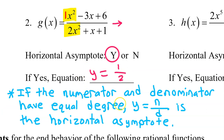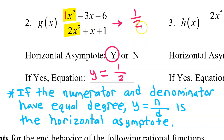If you don't feel like memorizing these rules, you can just focus on the leading terms and ask yourself what happens to these as x approaches infinity. This expression simplifies down to 1 half because the x squared cancels out. And when you get a constant like that, that is the horizontal asymptote.